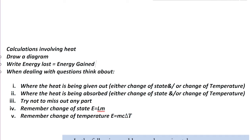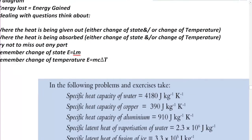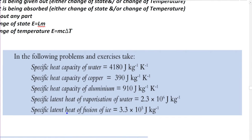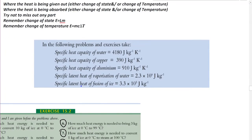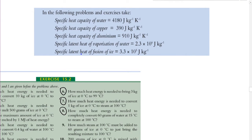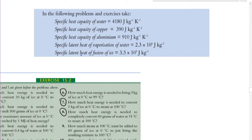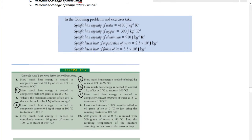In these exercises, we're going to use the following specific heat capacities of water, copper, and aluminium. We're also given the specific latent heat of vaporization of water and the specific latent heat of fusion of ice. These values are provided for all the questions we're going to do.